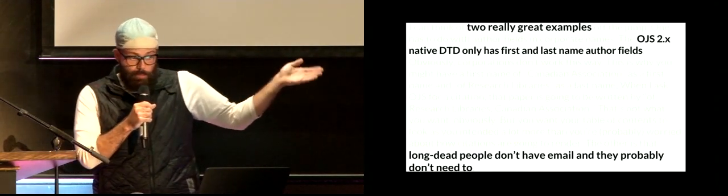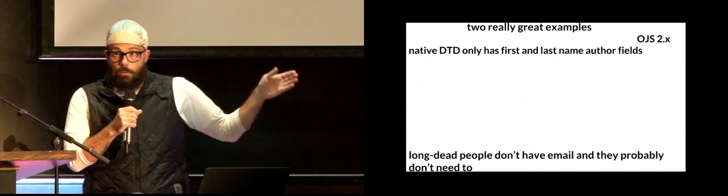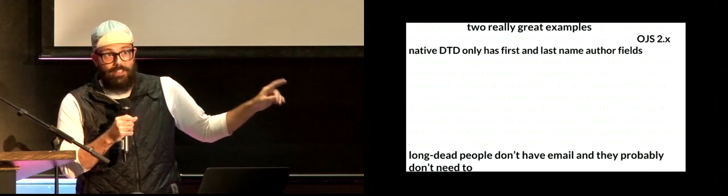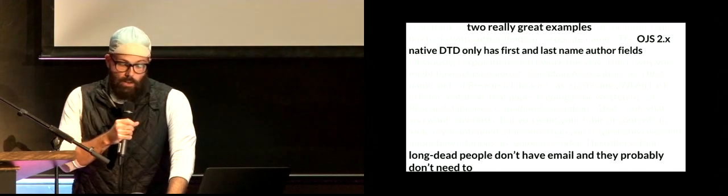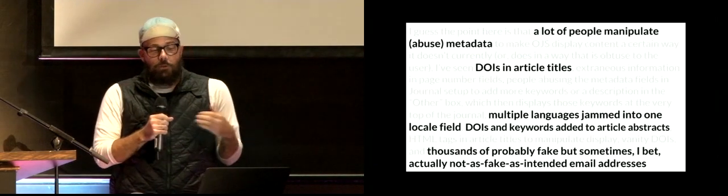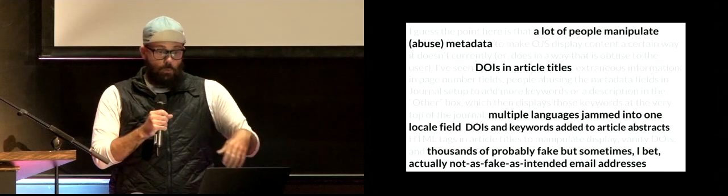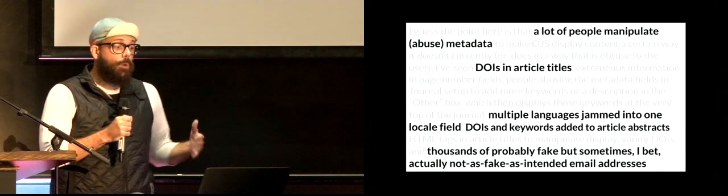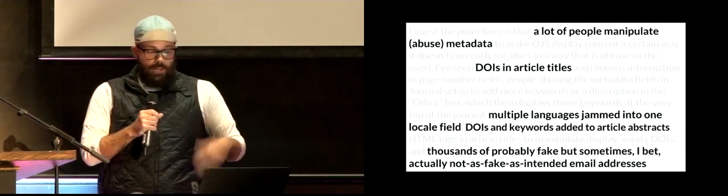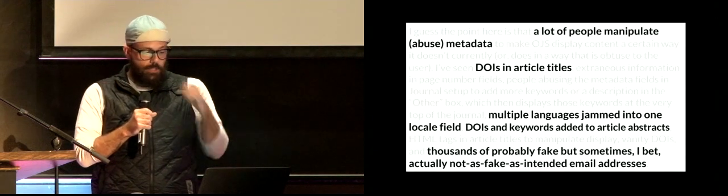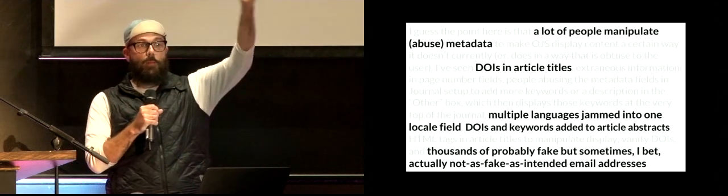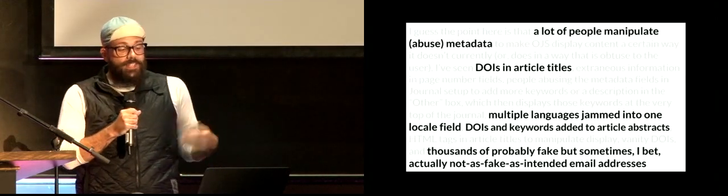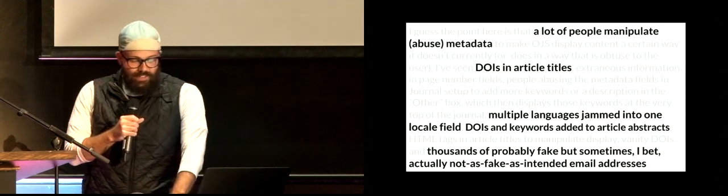The other major issue is that long-dead people don't have email, and they probably don't need to. Many of us have made up something like fakeguy at gmail.com, and that email actually does exist and has many emails from people who have registered stuff in OJS. The point is that there are a lot of people who manipulate and abuse metadata to make OJS do something that it doesn't currently do.